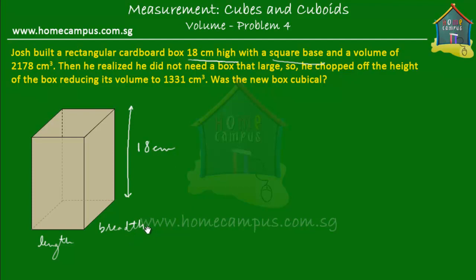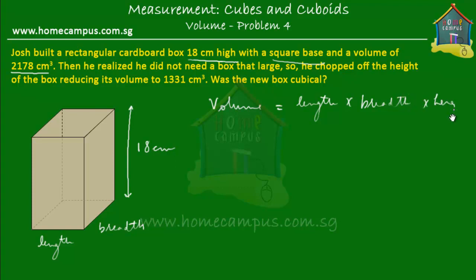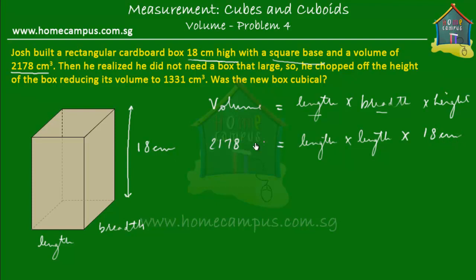Now we have to find out if, after chopping, the height was also equal to the length and the breadth. We have the volume equal to 2178 cubic centimeters before the box was cut. We know that the volume of a rectangular box or cuboid is equal to the product of its length, breadth, and height. Since the breadth equals the length, we can write it as length × length × height, where height equals 18 centimeters.